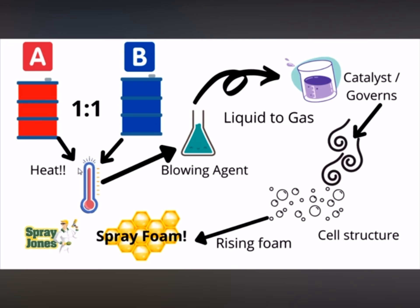That heat given off affects a blowing agent that is inside the resin in a liquid state, and it causes a phase change to happen — it goes from liquid to gas. As it gases, it's going to puff open and blow open the cells that we want. So instead of a hard plastic like a truck box coating or an epoxy coating on the floor, we're going to have a cellular plastic.